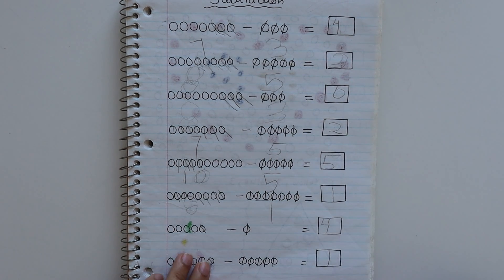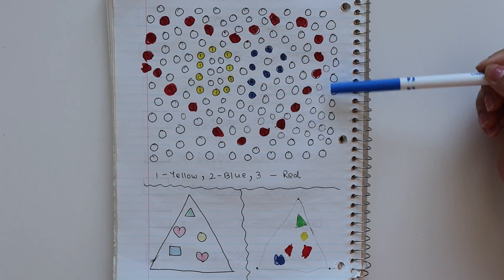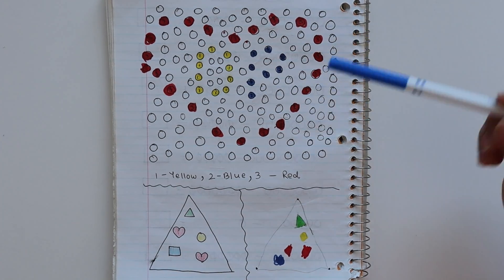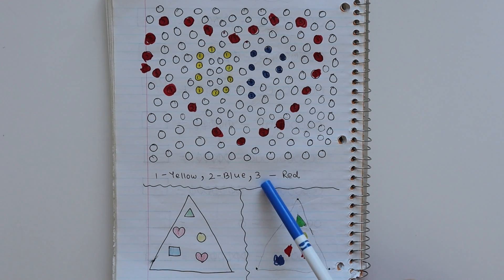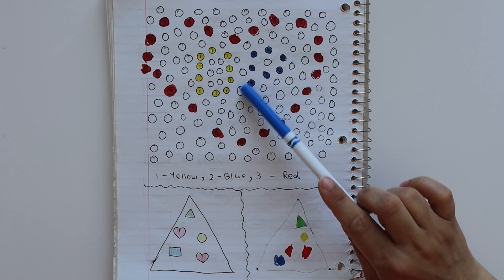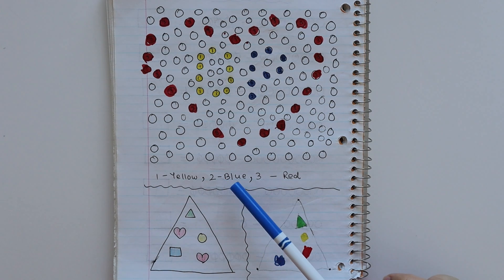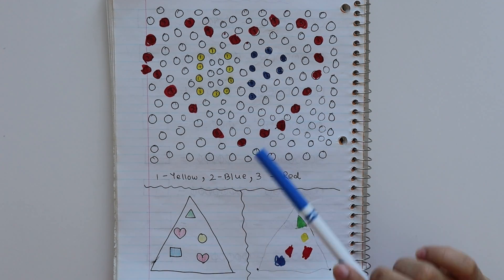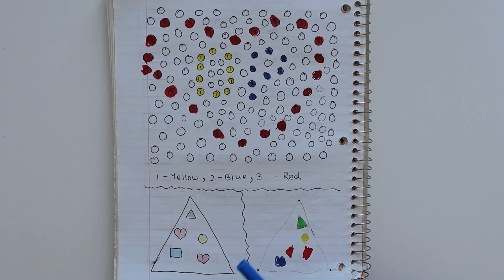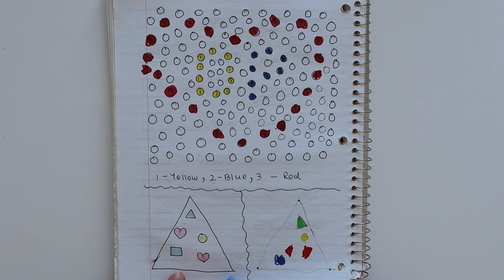This is a basic subtraction worksheet. Here I have randomly drawn some circles with numbering and colored them. For number 1 I have yellow color, number 2 I have blue, and number 3 I have red. Underneath I had a little space, and here I used shapes to draw a pattern.